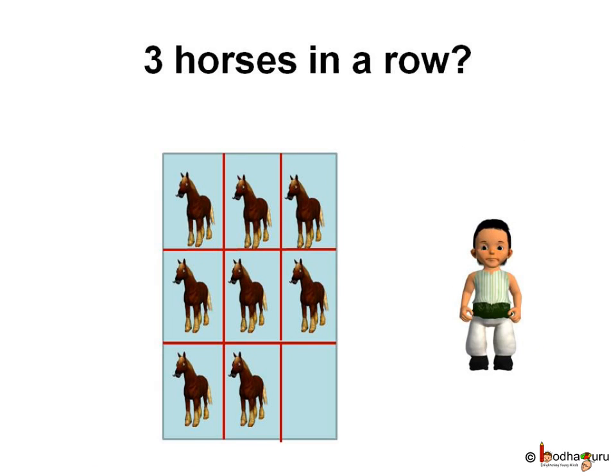Then he tried to arrange 3 horses in a row. This wasn't a good idea as the last row had only 2 horses.